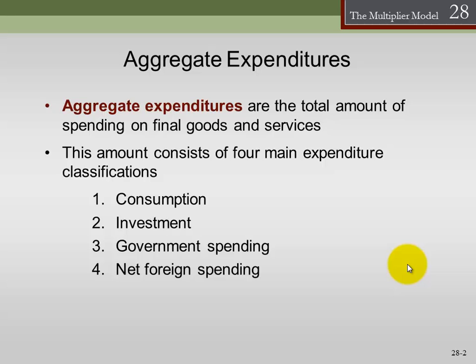You'll notice this looks very much like what we talked about when we talked about real gross domestic product. It's basically the same. Remember that production equals expenditure in the aggregate — this is a national income accounting identity. So it makes sense that these four components would be the same for aggregate expenditure as they are for aggregate production. This is just the expenditure method of calculating production.